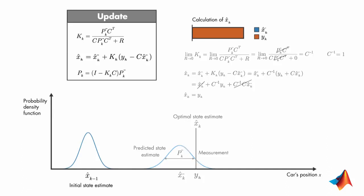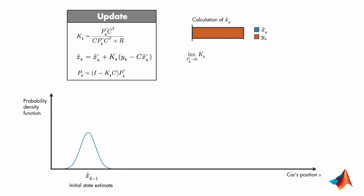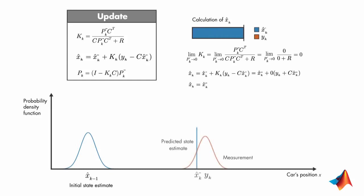On the other hand, if the a priori error covariance is close to zero, then the Kalman gain is found as zero. Therefore, the contribution of this term to x-hat k is ignored, and the computation of x-hat k comes from the a priori state estimate. On the plot, we'll show the a priori state estimate with an impulse function, which has zero variance. And since the a posteriori estimate is equal to the a priori estimate, we'll show it with the same impulse function.